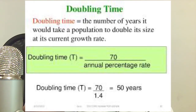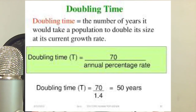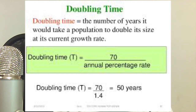The next thing we learned is Doubling Time. Doubling Time is the time it takes for a population to double. This is an estimated time based on the current population growth. So, if it takes five years for something to double, that means their growth rate is really big — or they just don't have a lot of people.